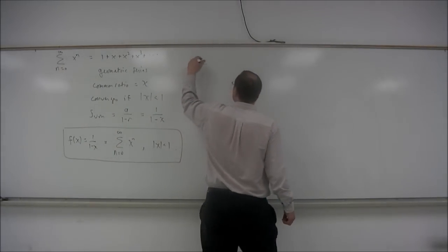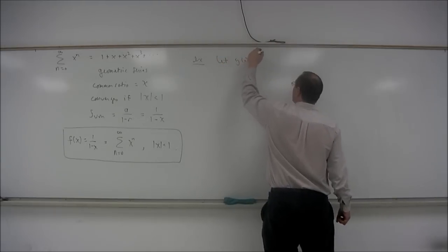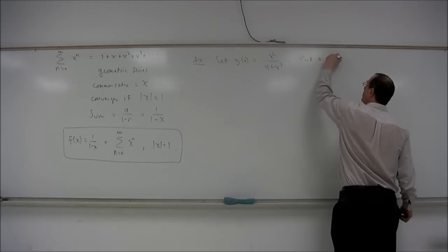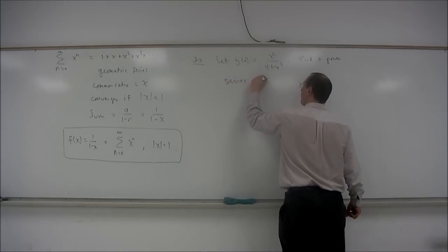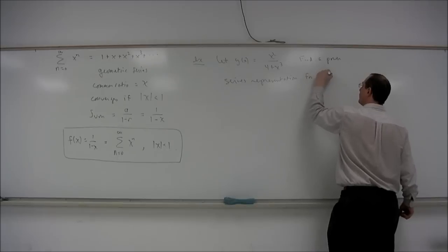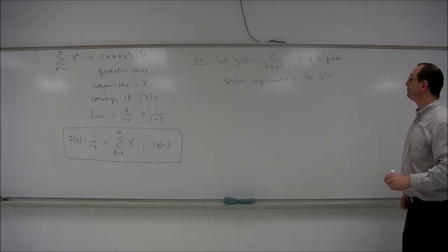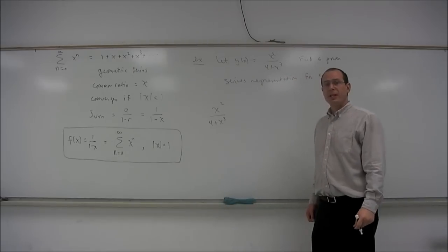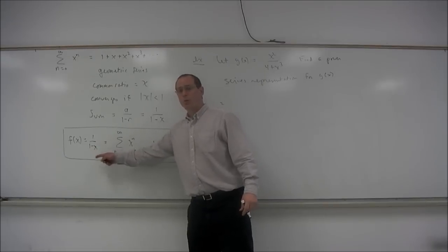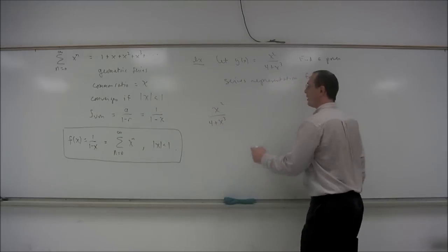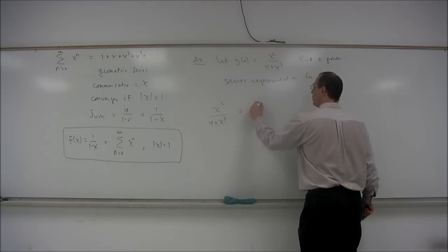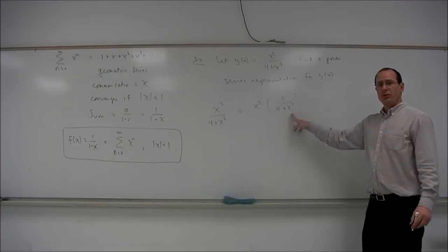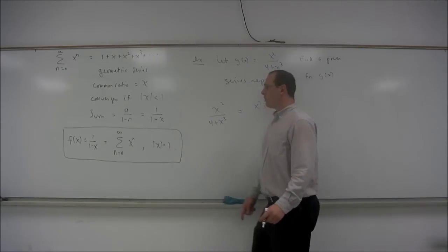Let's let the function g of x be x squared over 4 plus x cubed, and let's find a power series representation for g of x. What we want to do is take x squared over 4 plus x cubed and manipulate it algebraically to make it look as much as possible like 1 over 1 minus x. First, there's a 1 in the numerator, so let's factor x squared from the numerator, and then we get x squared times 1 over 4 plus x cubed.